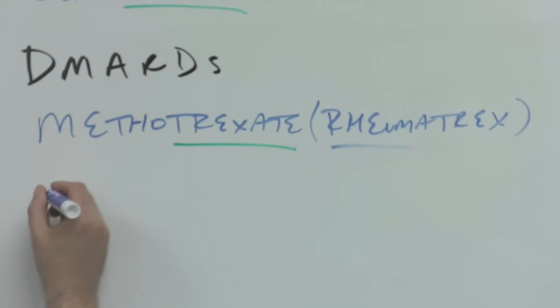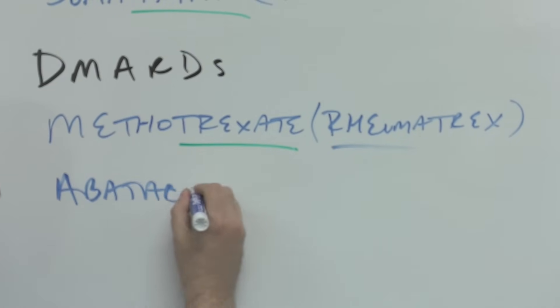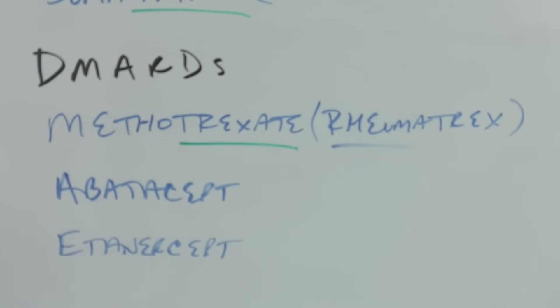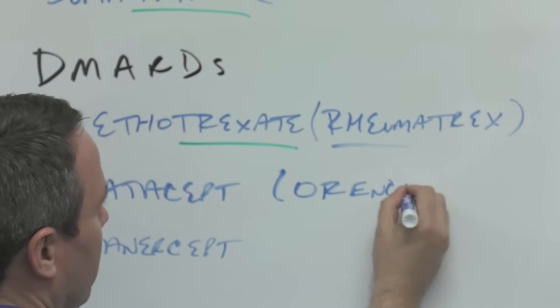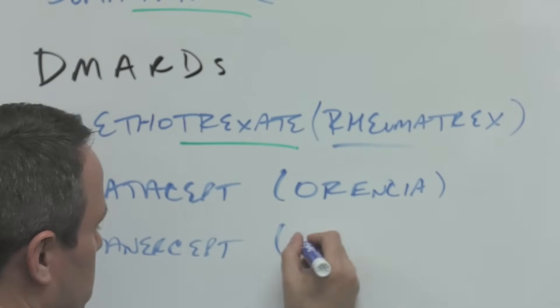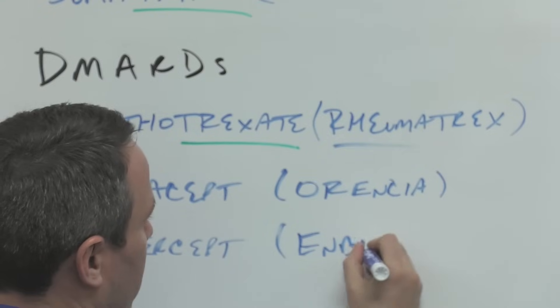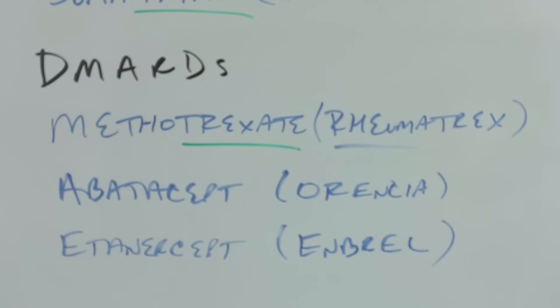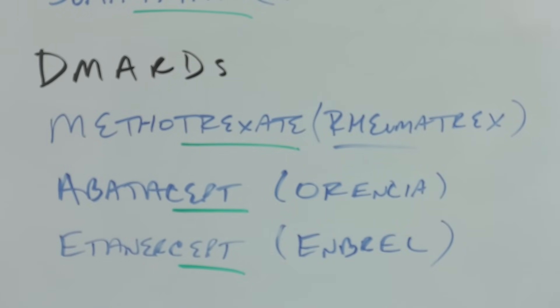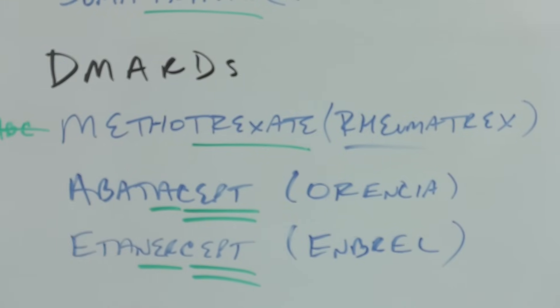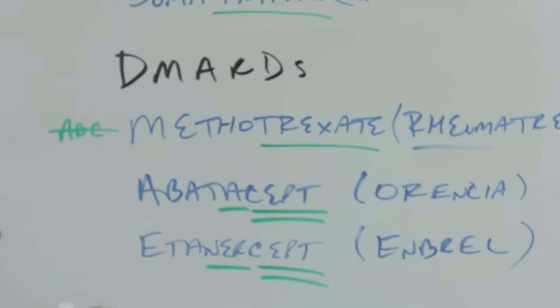Then we have two biologics: abatacept and etanercept, so Orencia and Enbrel. And I'm going to underline the cept because that's the stem for these biologics, but also the ta. So we'll double underline the cept and the ner. And so the ta-cept and ner-cept means that it's a certain kind of disease-modifying anti-rheumatic drug. But you see we don't have alphabetical order here because we have a non-biologic, then we have two biologics in alphabetical order.